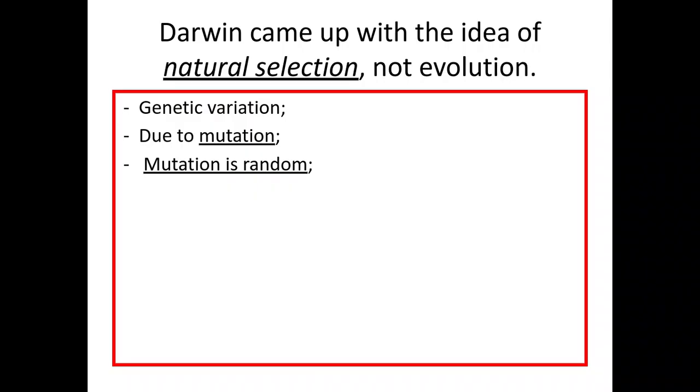Or it could have no effect on the increase of survival, or it could have a negative effect on survival. Now in natural selection we're looking for those advantageous alleles that are going to give the organism an edge at survival and therefore are more likely to pass on those alleles to their future offspring and future generations.